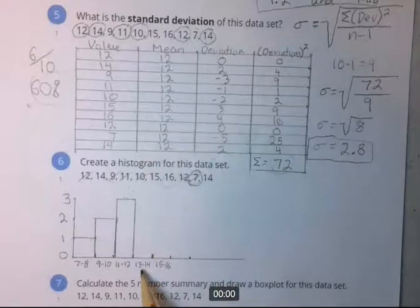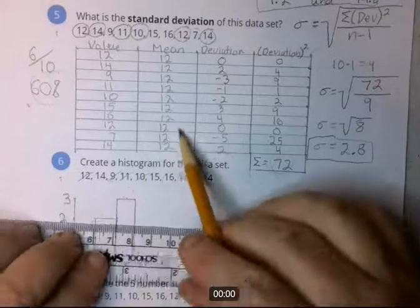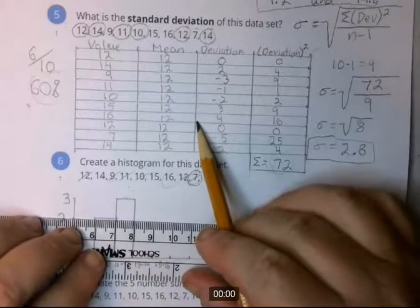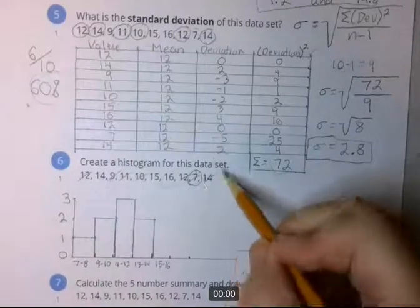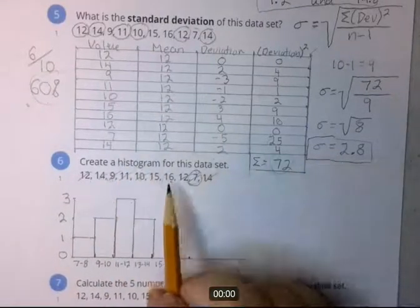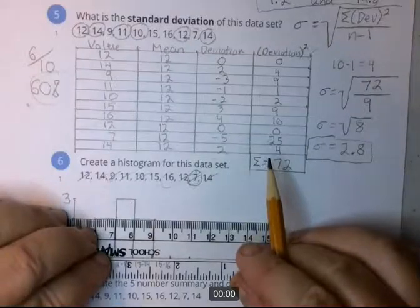And then we've got no 13s. But in the 13, 14 bin, we have no 13s but we have two 14s. So that's going to take us to right here. Okay, so we have two in that bin, the two 14s. And finally 15 and 16, the last two left. There's two in that bin. One 15 and one 16.